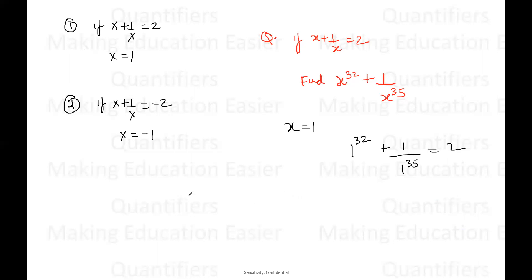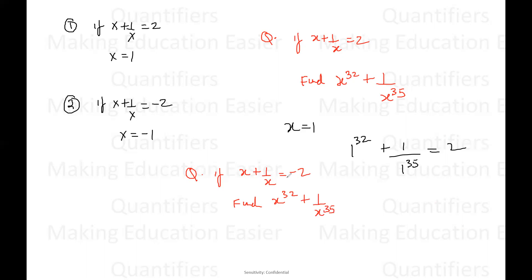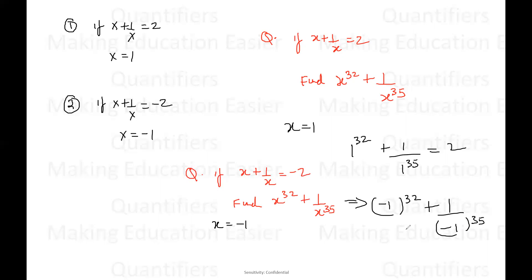Now let's say in the question it is given that X plus one by X is equal to negative two, and they are asking: find X to the power 32 plus one divided by X to the power 35. We know the result — in this case X will be equal to negative one. So put X equal to minus one: we get minus one to the power 32 plus one divided by minus one to the power 35. Minus one to an even power is always one, and minus one to an odd power is negative one. So finally we get one minus one, which is zero.